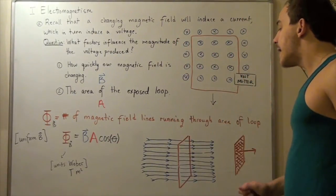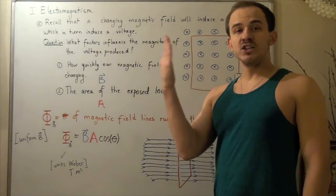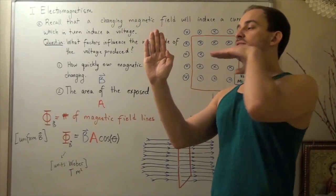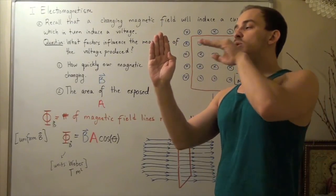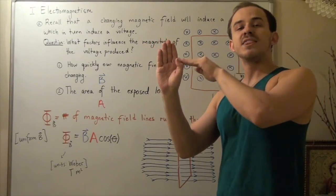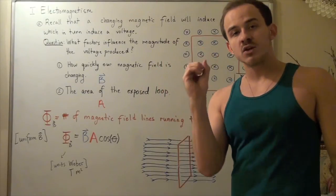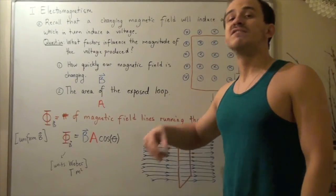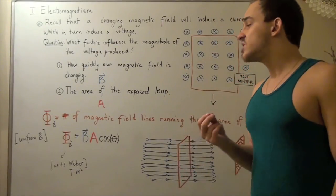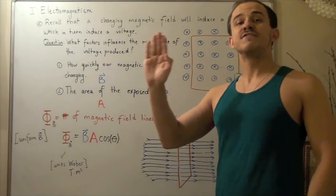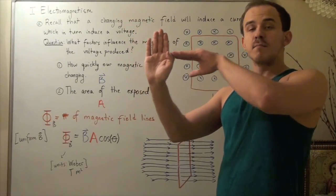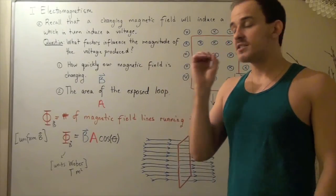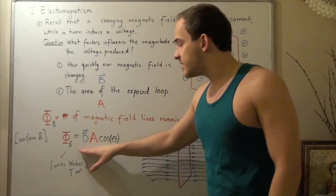But notice what happens. If I take my loop and I rotate it exactly 90 degrees, then none of these field lines will be able to pass through my loop, and that means my flux will be zero. And that's exactly what this cosine says. Cosine of 90 is zero. And so if my loop is not facing my magnetic field lines, there's no flux through my loop, and my flux is zero. And that's exactly what this states.